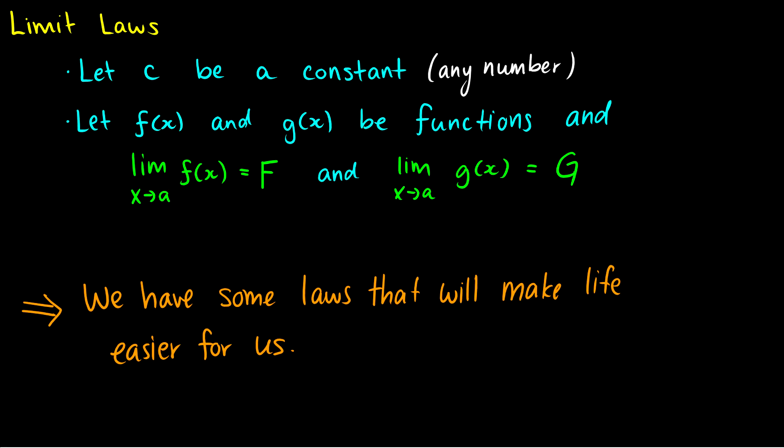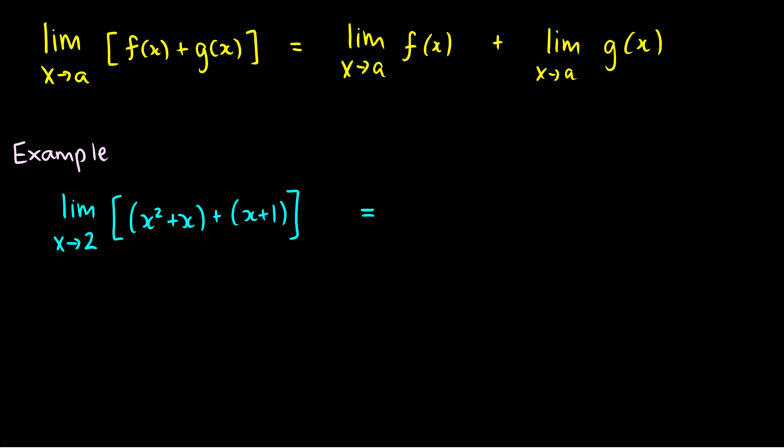We'll just show them with an example. The first law says if we have the limit as x goes to a of f of x plus g of x — two functions put together — this is just the same thing as taking the limit as x goes to a of f of x and then adding the limit as x goes to a of g of x. So we can break up a complicated function into two different functions and take the limit of them separately, or we can take two limits and merge them together.